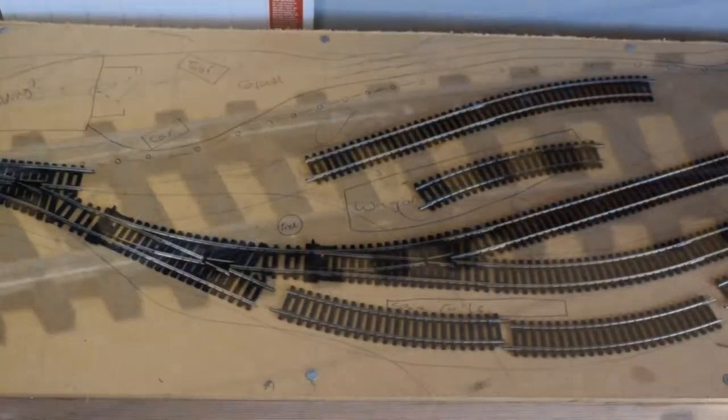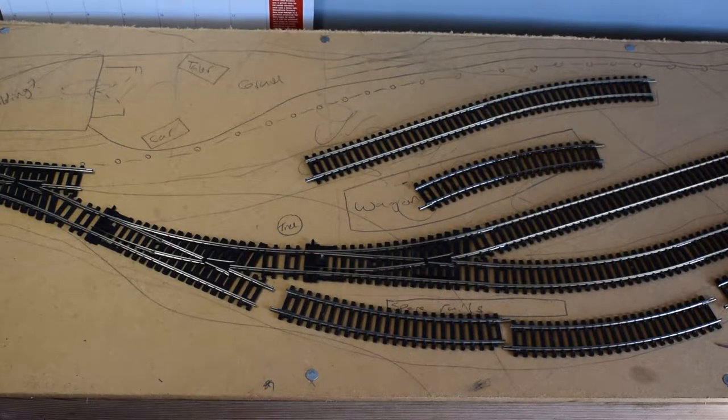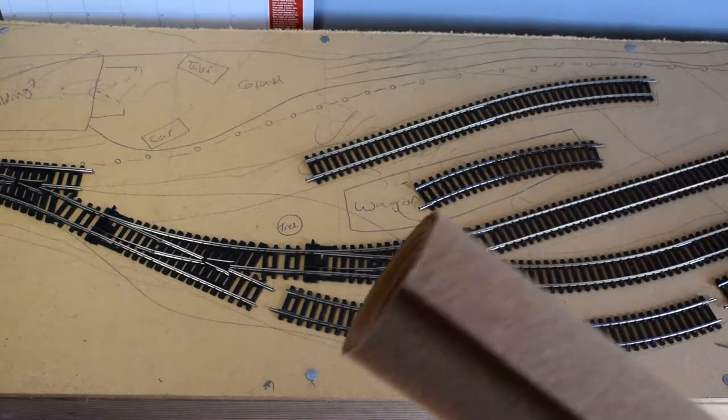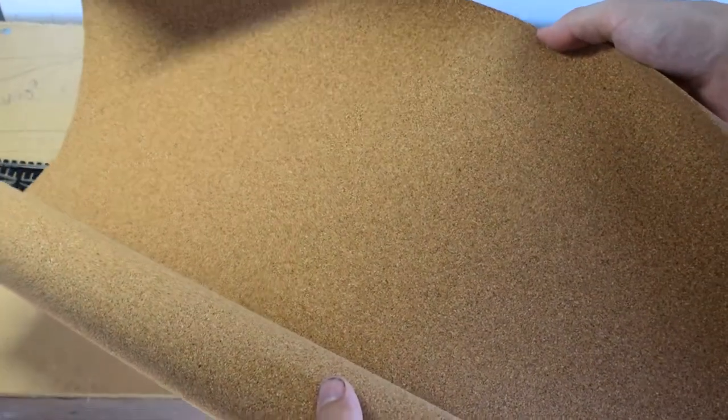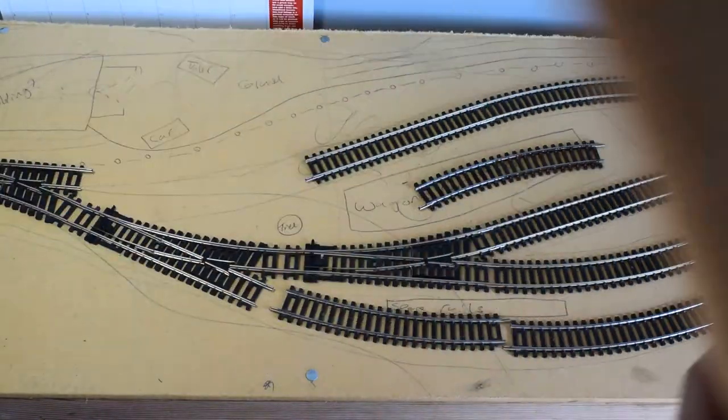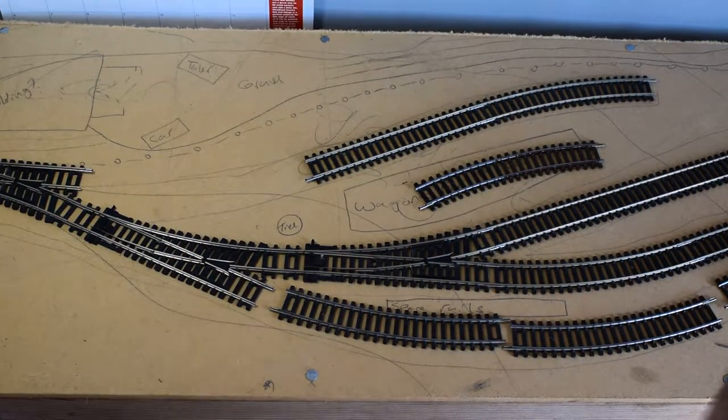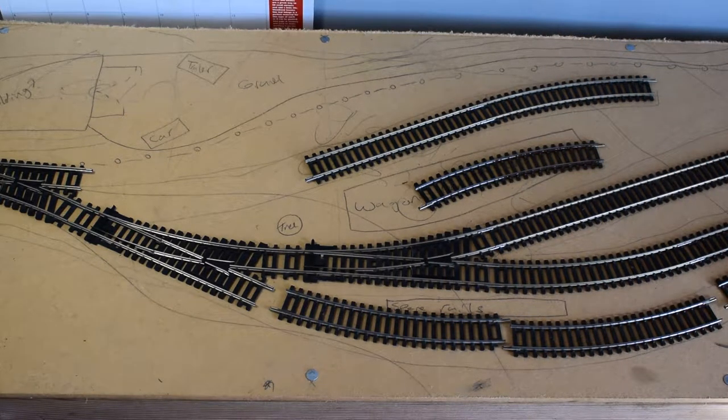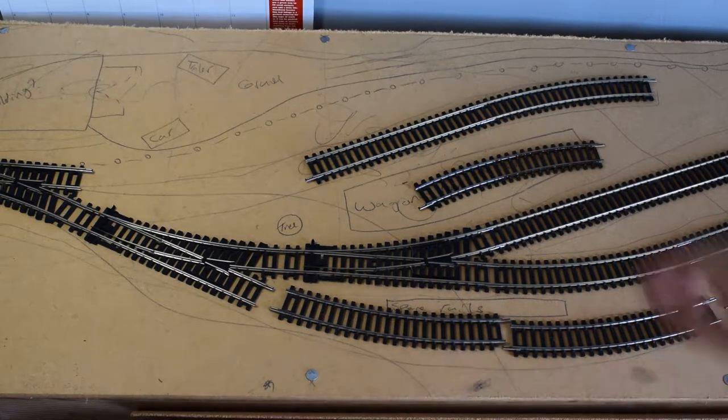Now moving on to the next section. Before we lay any track or color any track, we've got to put down something like this cork. This is 1.5mm thick cork I got straight off eBay, good value.